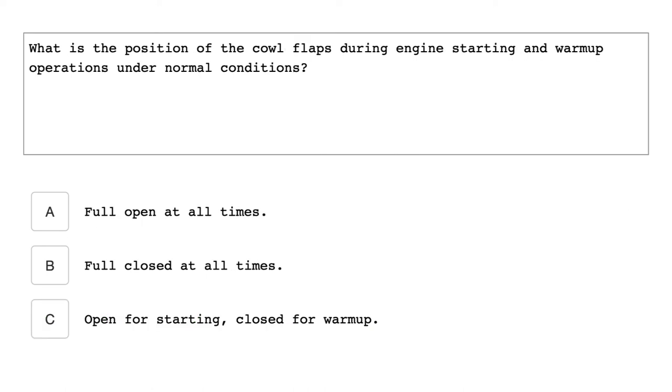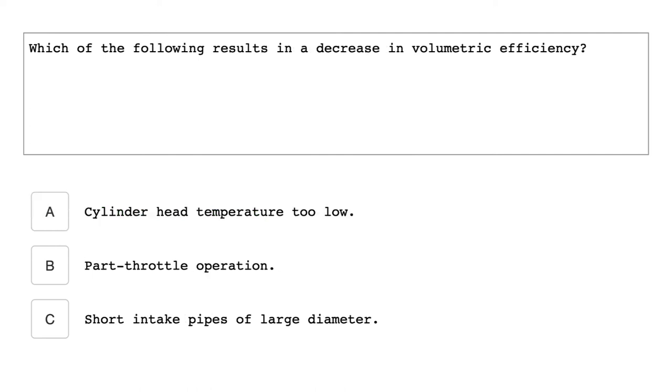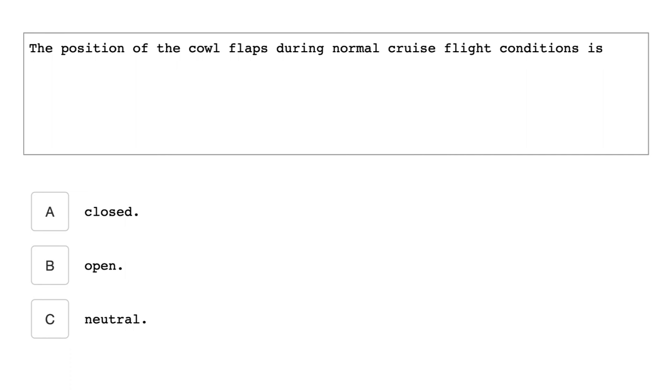What is the position of the cowl flaps during engine starting and warm-up operations under normal conditions? Full open at all times. Which of the following results in a decrease in volumetric efficiency? Part throttle operation. The position of the cowl flaps during normal cruise flight condition is closed.